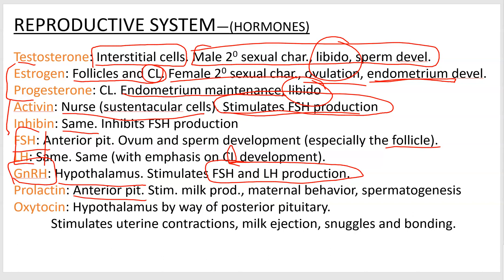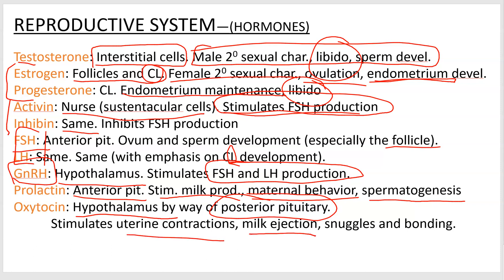Prolactin, made in the anterior pituitary, stimulates milk production — the mammary glands will make milk when exposed to prolactin. It also promotes maternal behavior, so if you're making milk you'll tend to be interested in nursing and taking care of the kid. Prolactin also helps in males with spermatogenesis. Lastly, oxytocin is made in the hypothalamus but stored and released by the posterior pituitary. It stimulates uterine contractions and milk ejection — not milk production — and also promotes snuggling and bonding behavior. When you snuggle with somebody, you produce oxytocin, and it helps bond you with that individual, even if that individual is your dog.